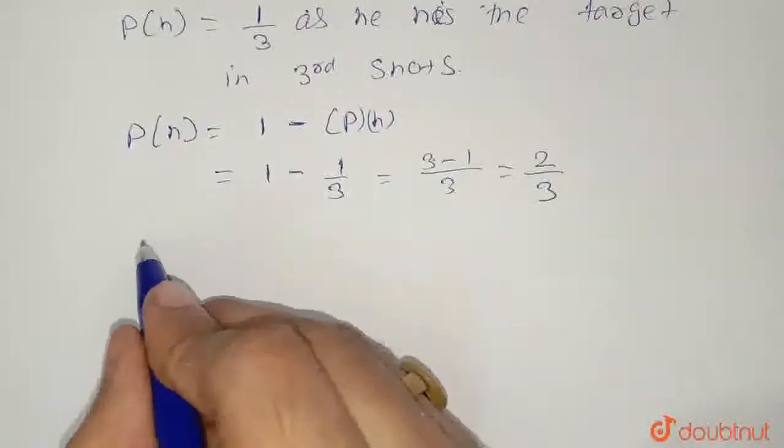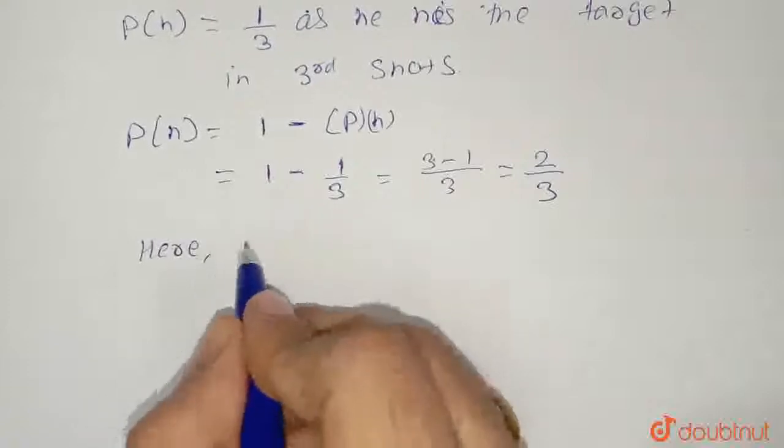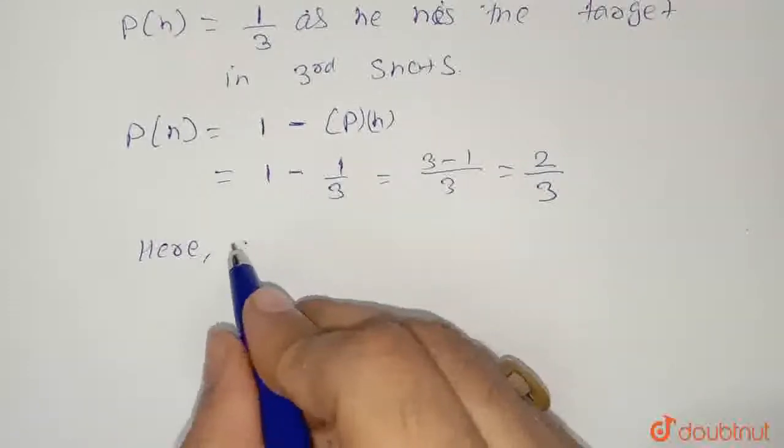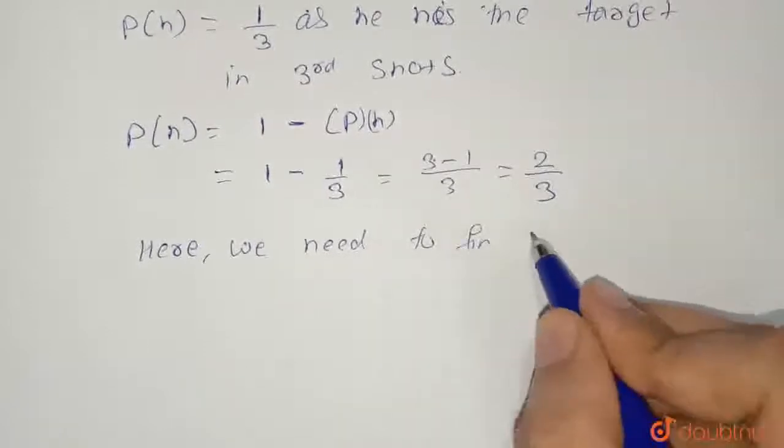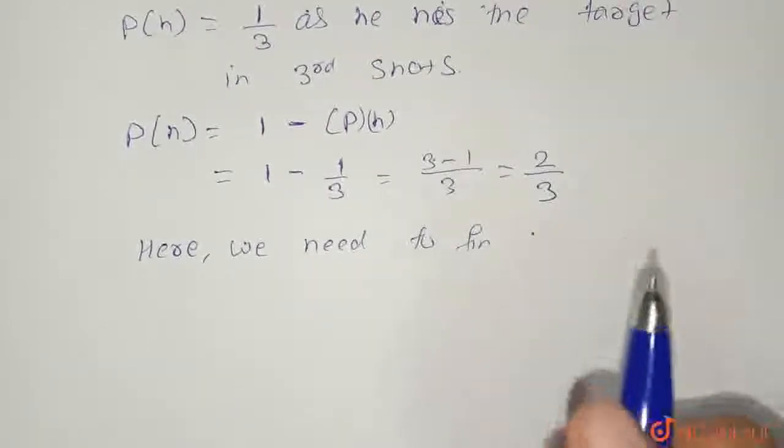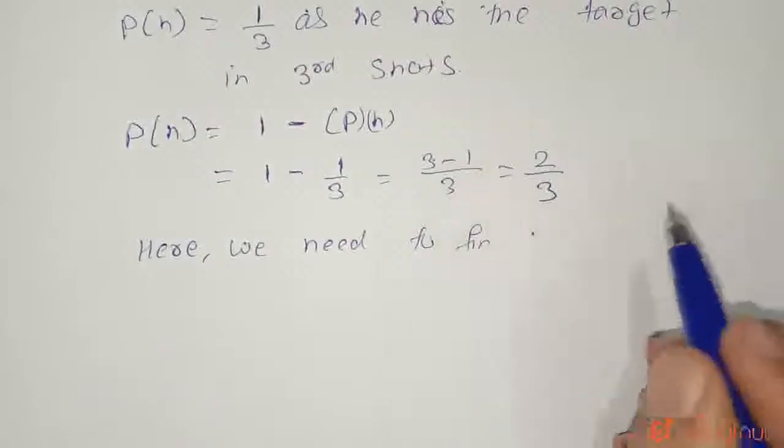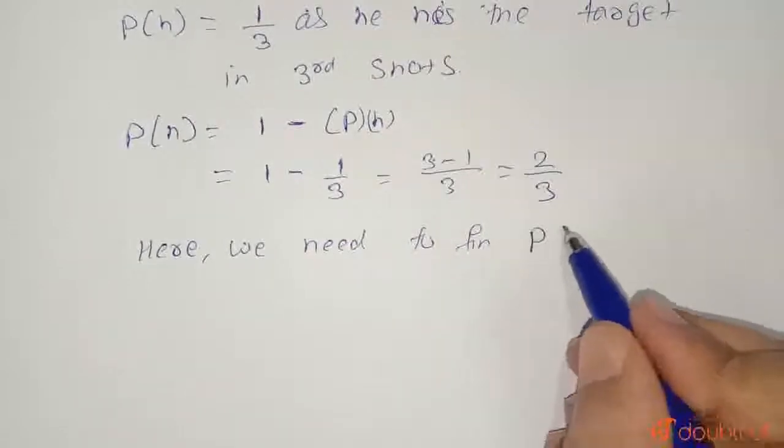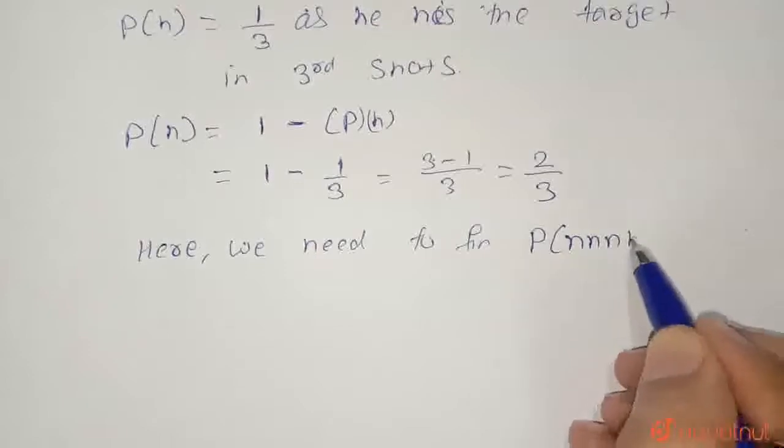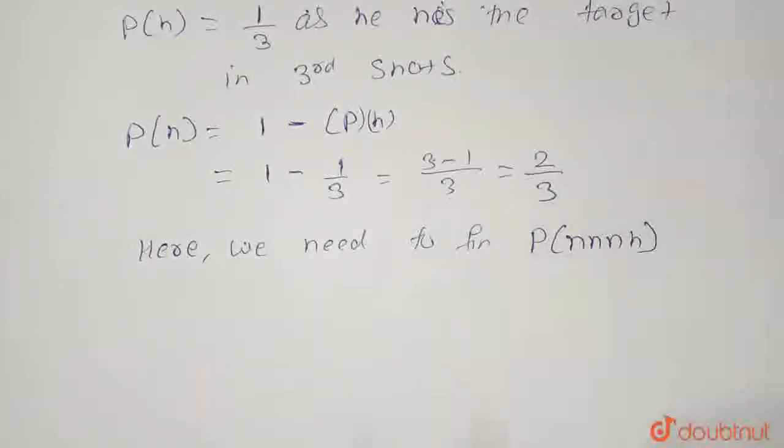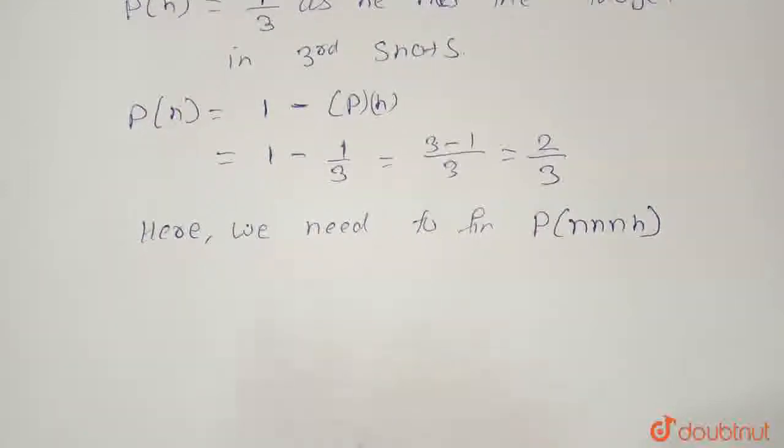Here we need to find that he will not hit the target until fourth shot. So probability of event when he missed the target and in the fourth shot he hits the target.